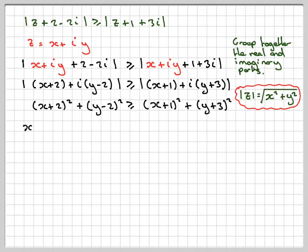Expanding this, we get x² + 4x + 4, expanding (y - 2)² we get y² - 4y + 4, greater or equal to x² + 2x + 1, and expanding this we get y² + 6y + 9.